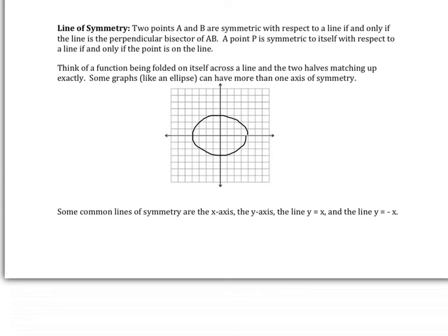Two points A and B are symmetric with respect to a line if and only if the line is a perpendicular bisector of AB. A point P is symmetric to itself with respect to a line if and only if the point is on the line. Think about a function being folded across certain lines. Very common lines are x = 0, y = 0, y = x, and y = −x. Some functions can have symmetry across several lines.